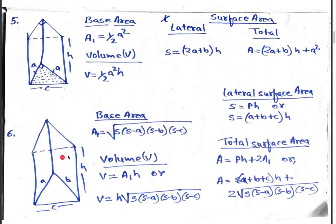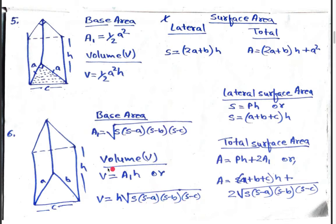For Figure 6, this is our figure of a prism. To find the base area of this prism, we will use the formula: A₁ = √(s(s−a)(s−b)(s−c)), where s is the semi-perimeter. The volume is V = A₁ × h, or h × √(s(s−a)(s−b)(s−c)).